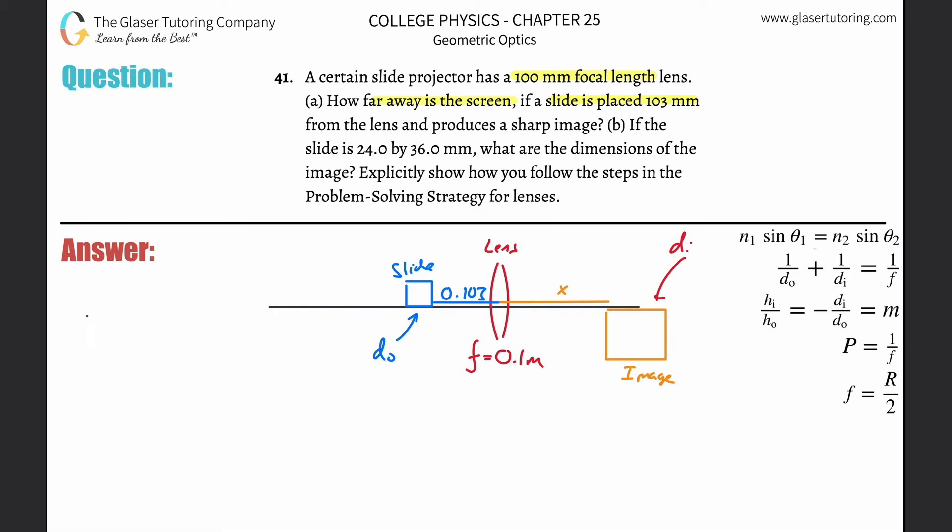We have the lens equation: 1/do + 1/di = 1/f. If we want to find image distance, we simply subtract this term to the right hand side.